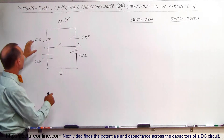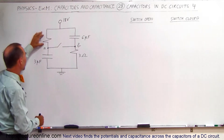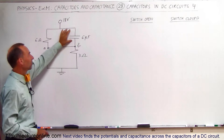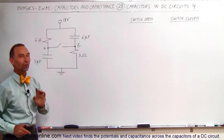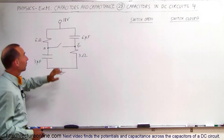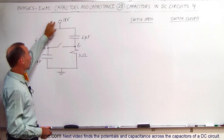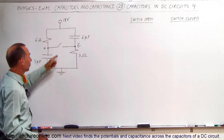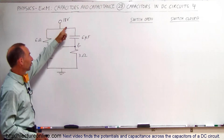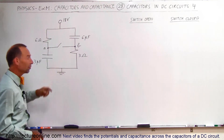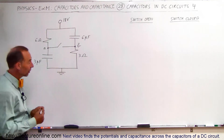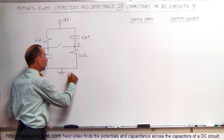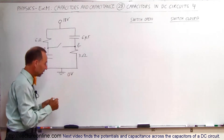We have a resistor and capacitor on the left side, and a capacitor and a resistor on the right side. We have an 18-volt source connected to ground at the bottom, which means that current will flow from the 18-volt supply down to ground. Ground is typically at zero volts.